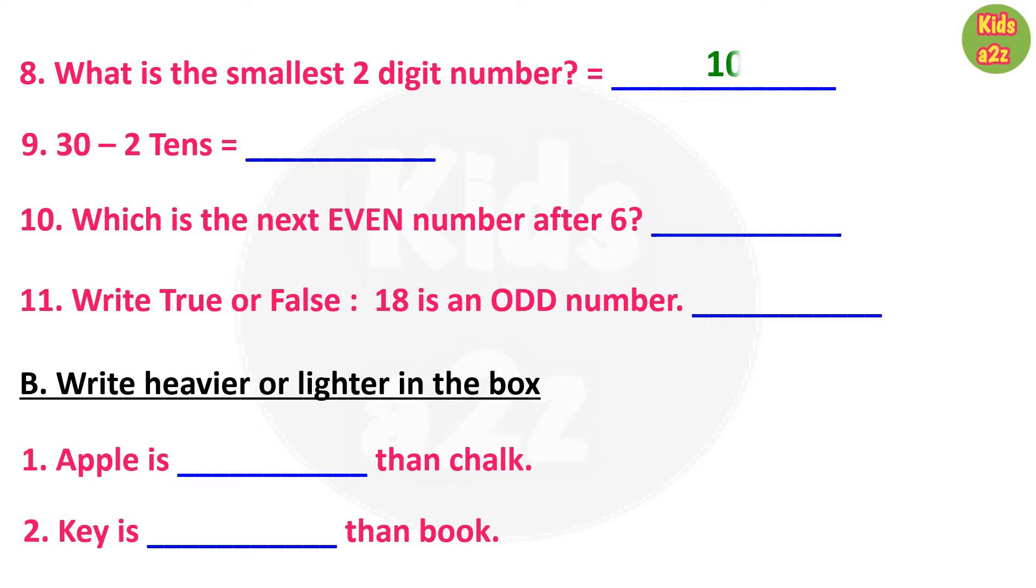For question number 9, kids need to subtract two tens from 30. So two tens means 20. Now 30 minus 20 equals to 10. Question number 10: which is the next even number after 6? Answer is 8.